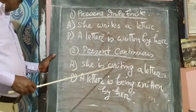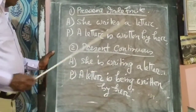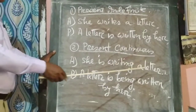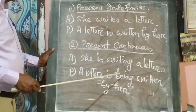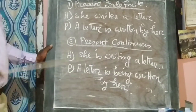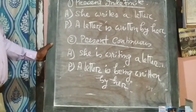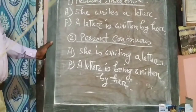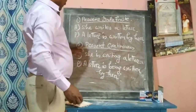Another example in present continuous: 'We are playing football' becomes 'Football is being played by us.'